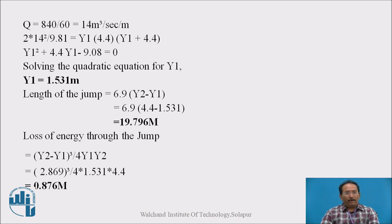Now we will calculate the loss of energy through the jump. We know the equation: y2 minus y1 bracket cube upon 4y1 y2. Already we have derived it. Put the values of y1, y2, we get loss of energy as 0.876 meters.